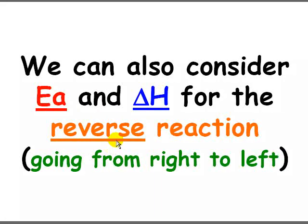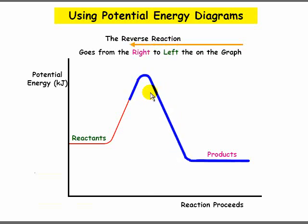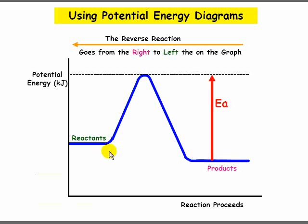We can also consider the activation energy and delta H for what we call a reverse reaction. In a reverse reaction, we go from right to left on the graph. In the reverse reaction, we start with what we call the products. If we follow the blue line, we'll see what happens — we go from right to left, products to reactants. The Ea for the reverse reaction is from the products all the way up to the activated complex, so we call this Ea reverse.